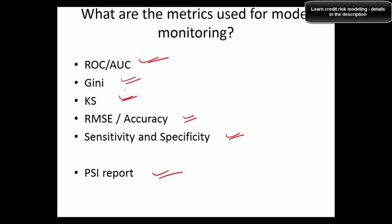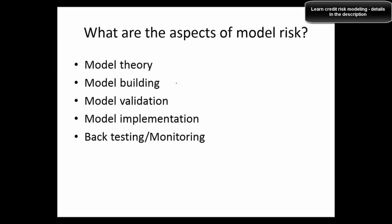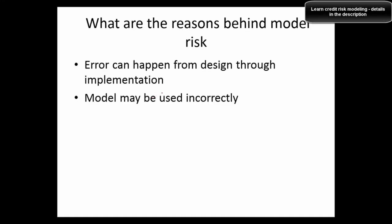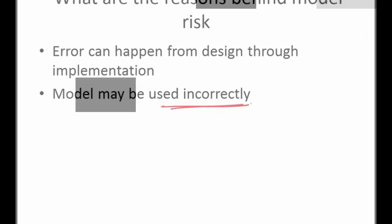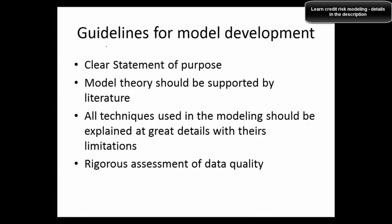What are the aspects of model risk? Model risk involves model theory, model building, model validation, model implementation, back testing, and monitoring — all managed under Model Risk Management (MRM). Model risk is about understanding whether a model has been built properly, as there could be many reasons a model could have been built incorrectly, and a wrong model can be very hazardous. Errors can occur anywhere from design through implementation.